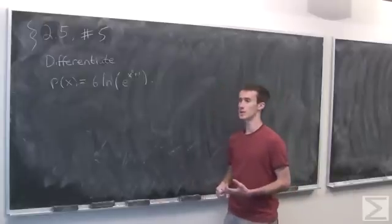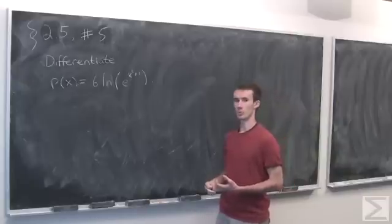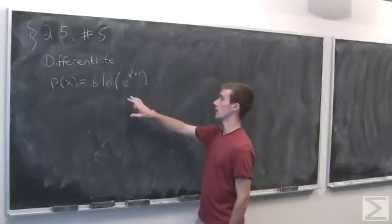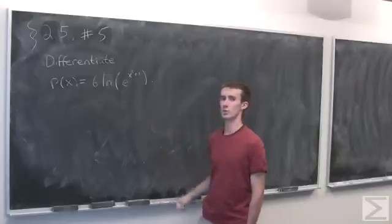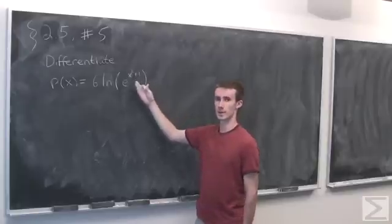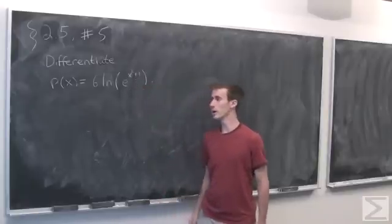Now there's two ways to do this. We could take the long approach and compute this in a very straightforward manner using the chain rule, twice actually, since we have x squared plus one sitting inside the exponential function which is again sitting inside the natural log.